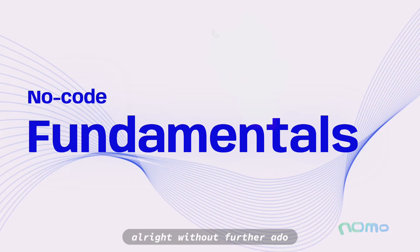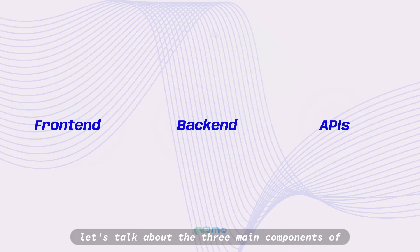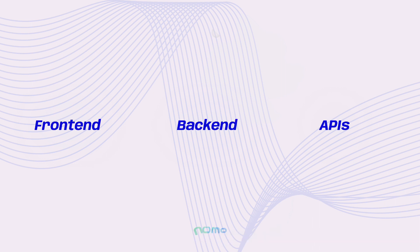Alright, without further ado, let's talk about the three main components of making a software application: the front end, the back end, and the APIs.